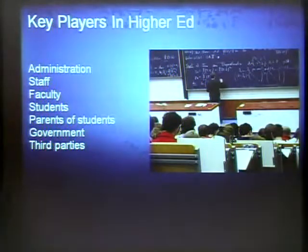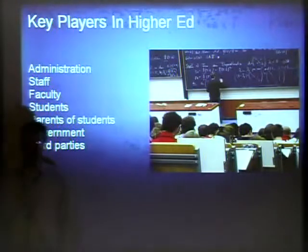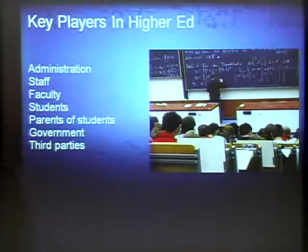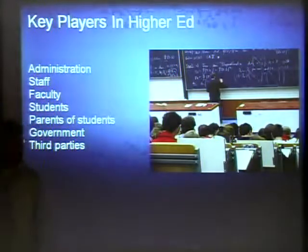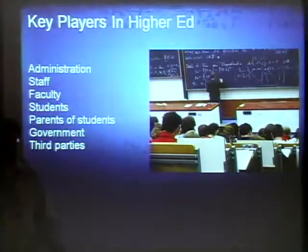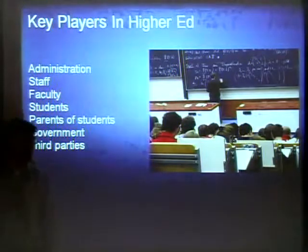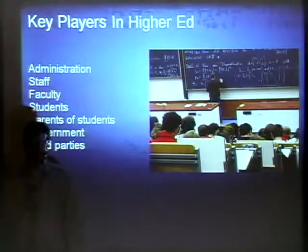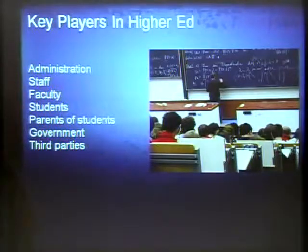Some terms you'll hear regularly at the university: the provost, who is basically the boss of faculty and is in charge of teaching and research. The registrar is typically the person who deals with student educational records — making sure grades get recorded, that information is up to date. In our case, she is typically the data owner of student educational records.